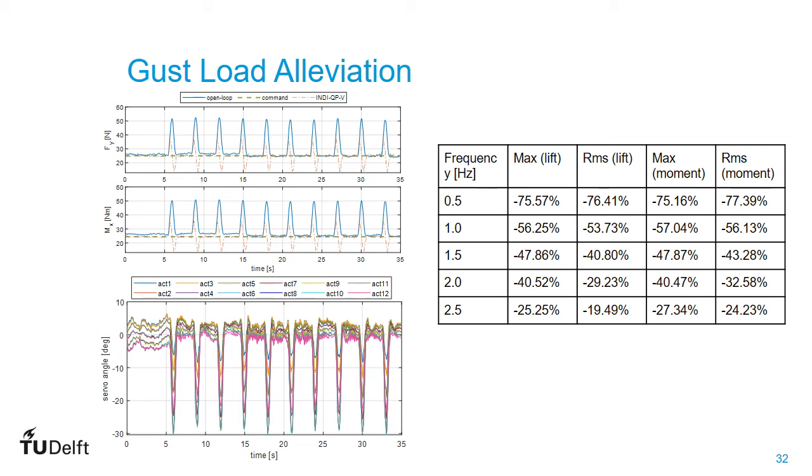The bottom plot shows the command and control inputs of 12 actuators. In the table on the right, we can see the performance of the controller for various frequencies. We can see that the gust controller can successfully reduce the additional loads caused by the gusts with 75% up to 36% for 0.5 and 1 Hz frequency gusts compared to the open-loop case. The performance reduces for higher gust frequencies, but this is purely the limitation of the actuator dynamics. With faster actuators, even better performance can be obtained for gust load alleviation.